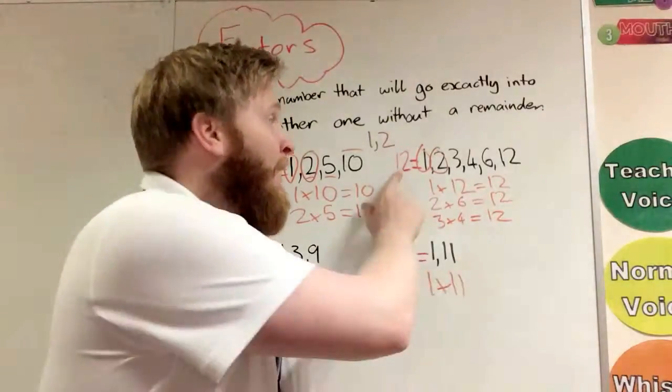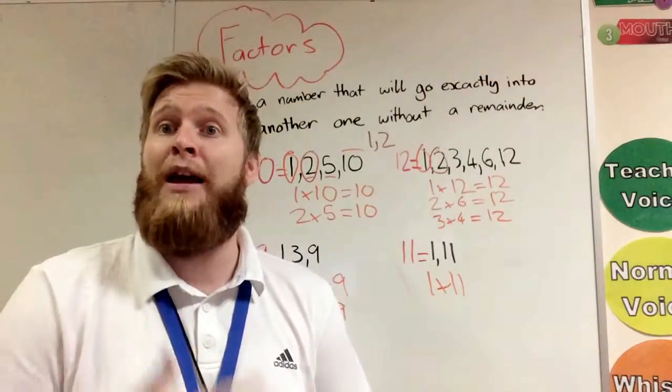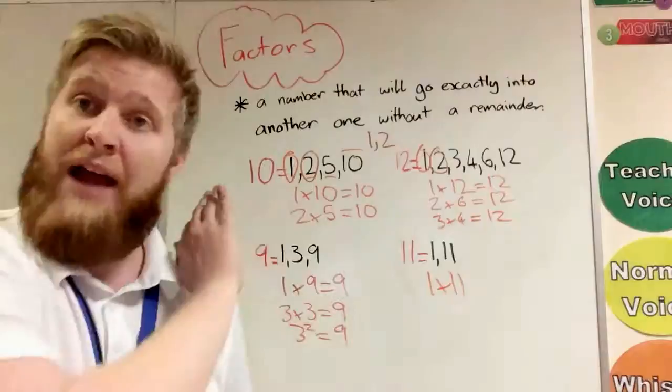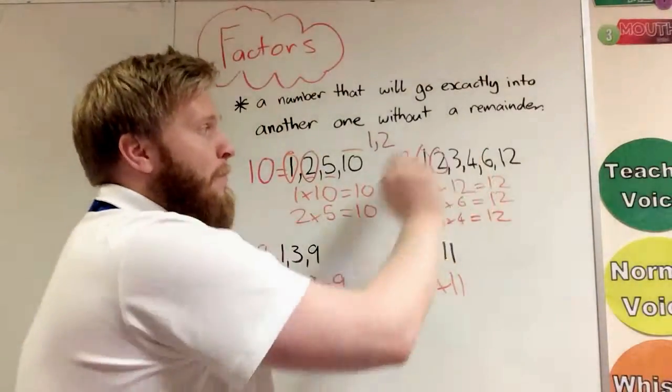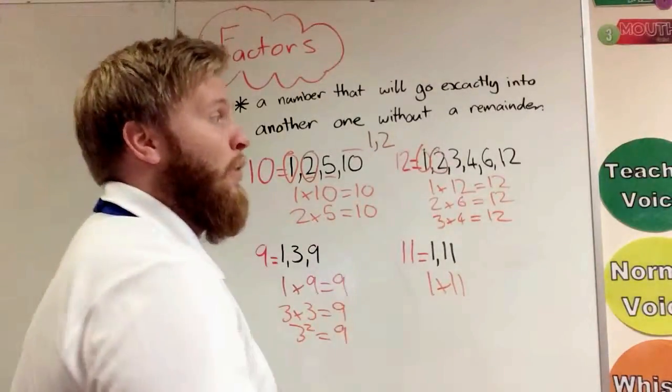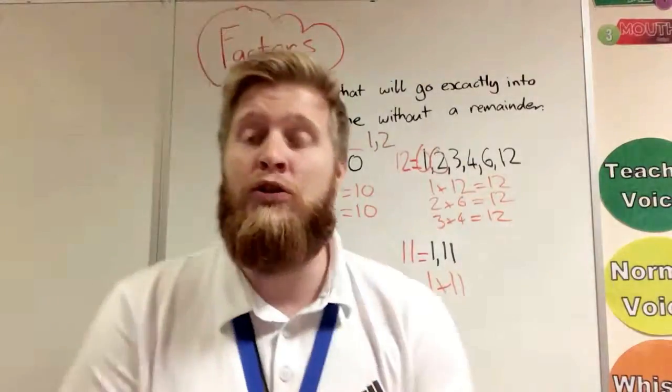Because when I do go to 7, 1 times 7 is 7, so I know that's not a factor. When I go to 2, because it is bigger than half, 2 times 7 is 14—it's always going to be bigger than the number we're looking for. So rather than testing every number, we can work from 1 up to halfway.